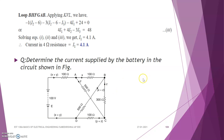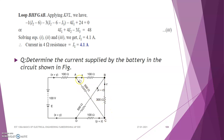The next question is to determine the current supplied by the battery in the given circuit. The circuit consists of many resistances and two batteries. The current flowing through the 100-ohm resistance is taken as x, the current through the 300-ohm is taken as z, and the current through the 500-ohm is taken as y.